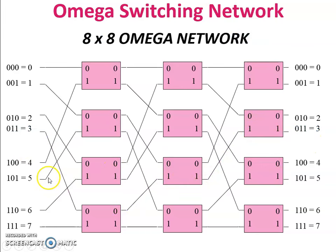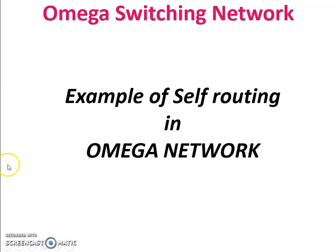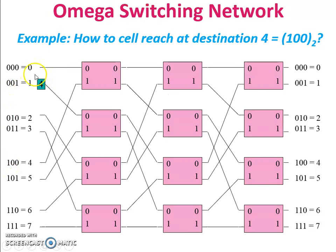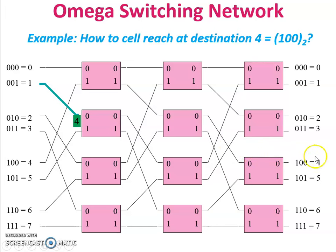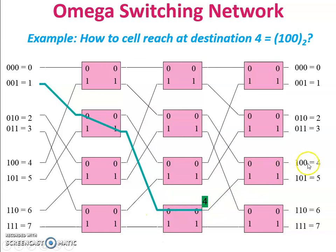The path is established between source 011 and destination 011. This is the 8×8 omega network connection — an example of self-routing. Now, for another example: source 1 has a cell with destination 4 (binary 100). The first bit is 1 (most significant), so it connects to the lower port and moves to the next switch. The second bit is 0, so it connects with 0. The last bit is 0, so cell number 4 reaches destination number 4.